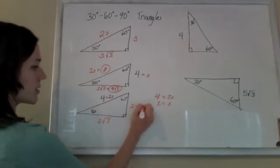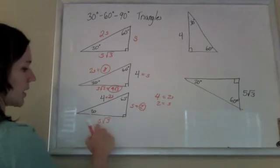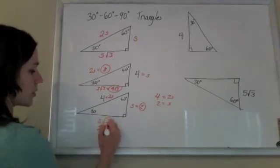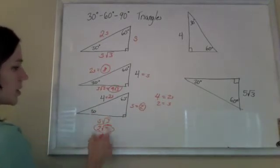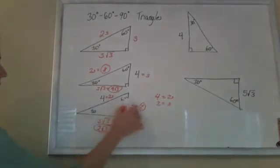So S is 2, and S root 3 is simply 2 root 3. So now I've solved this triangle. I have all the sides.